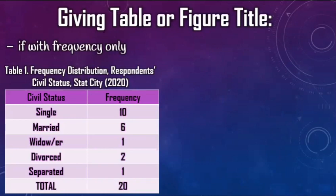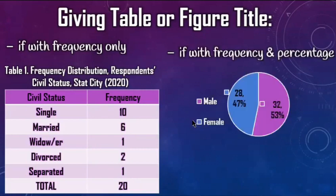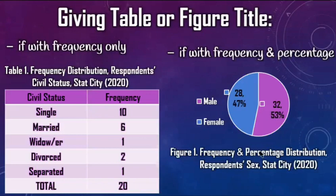You include the location and the year it was conducted, and the total is below 30. If there are more than 30 cases, you can add another column to include the percentage, and the title will be frequency and percentage distribution. In the case of a graph — for example with more than 30 cases — there are 28 females at 47 percent, and 32 males at 53 percent in a pie graph. The title of that graph will be below the figure: frequency and percentage distribution, including the location and when it was conducted.